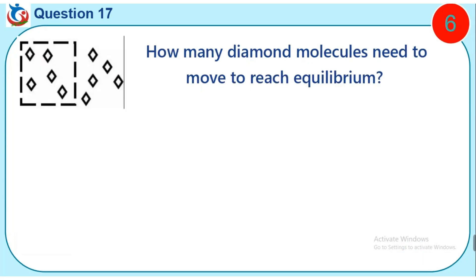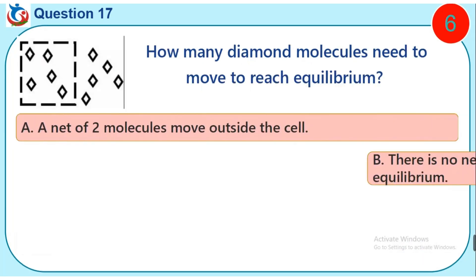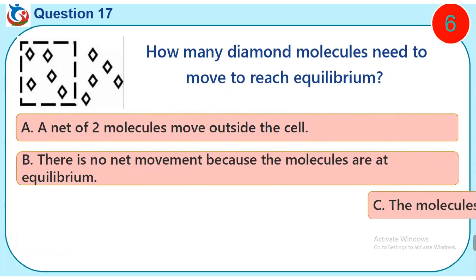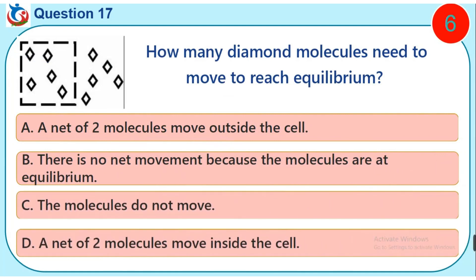Question 17. From the picture, how many diamond molecules need to move to reach equilibrium? A. A net of two molecules move outside the cell. B. There is no net movement because the molecules are at equilibrium. C. The molecules do not move. D. A net of two molecules move inside the cell.